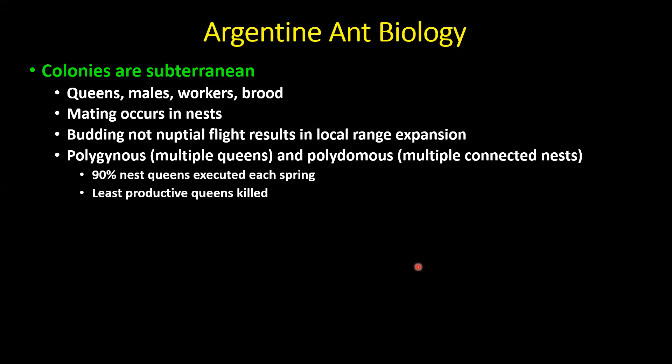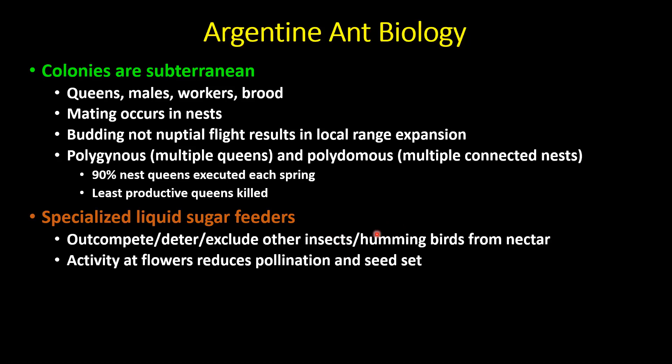Something interesting about Argentine ant: each spring, about 90% of the nest queens are executed. The executioners are other workers in the nest, who seek out the least productive queens and kill them. Chemical signals on the exoskeleton of the queens indicate whether or not they're vigorous reproducers.